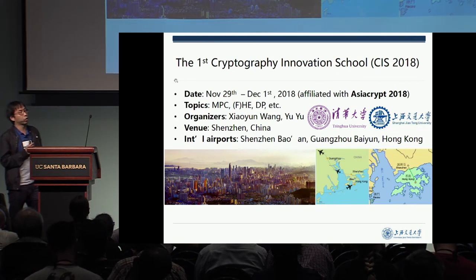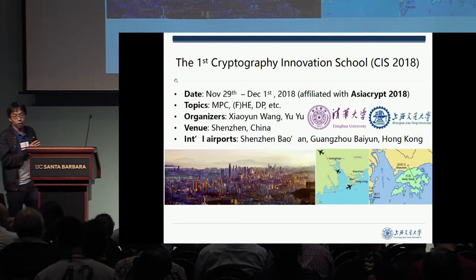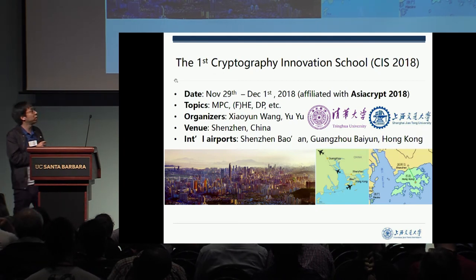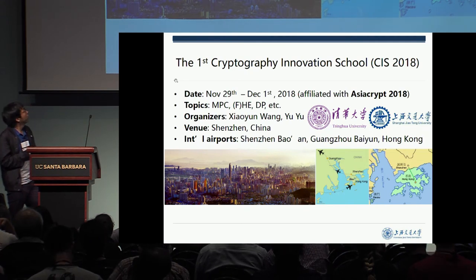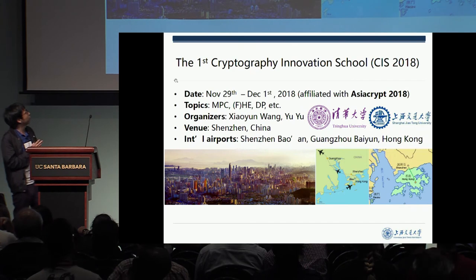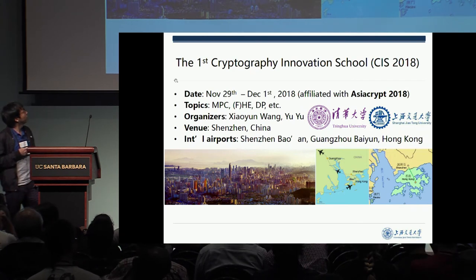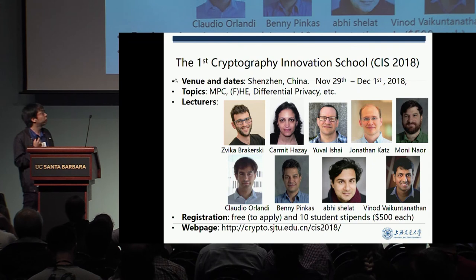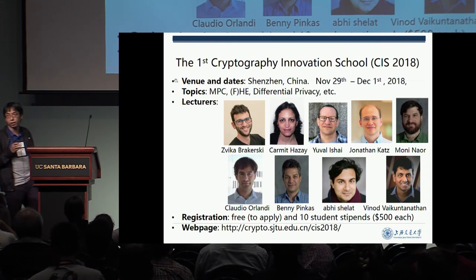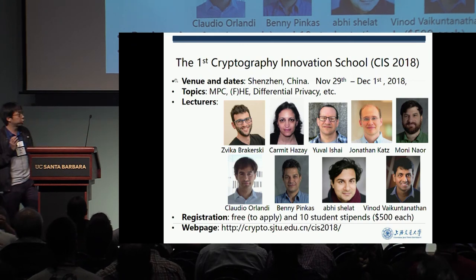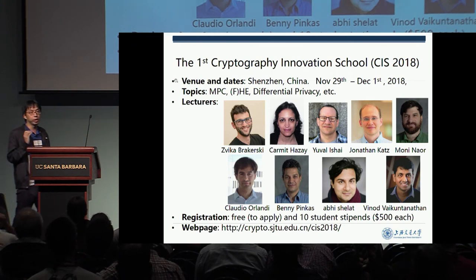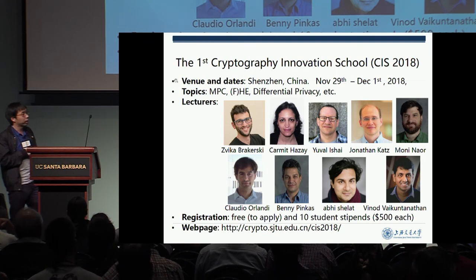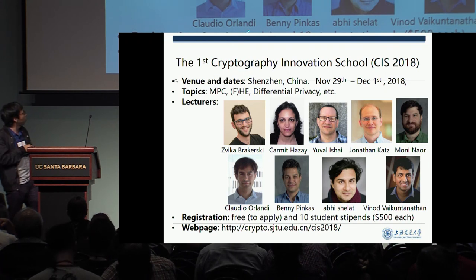It's just right before AsiaCrypt, so if you go to AsiaCrypt, you can make a stopover in Shenzhen, which is just next to Hong Kong, and it is very convenient to reach. Shenzhen has three international airports in the neighborhood. We have a very fantastic team of lecturers — you can see most of the faces at the conference. More importantly, it's free. The registration is free, but you need to apply. We also have 10 student stipends available. If you're interested, please go to our website.